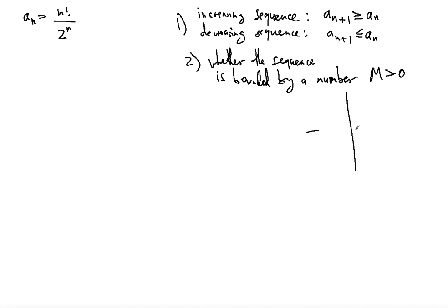I will show you graphically: we can have a sequence increase and keep increasing as n goes to infinity, but there is a line at some number m greater than 0 that bounds it. In that case, the sequence will converge to it. So first, let's determine whether this sequence is increasing or decreasing.